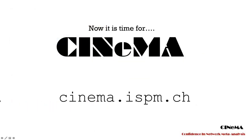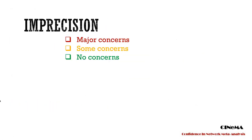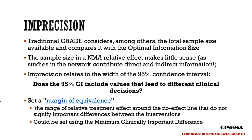Now we will move to the next item, which is imprecision. Traditional GRADE considers the sample size accumulated, among others, but in the context of network meta-analysis, sample size makes little sense. We suggest to judge imprecision considering another GRADE approach, which is the width of the 95% confidence interval, and to judge whether it includes values that lead to different clinical decisions.